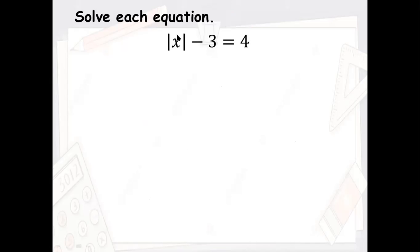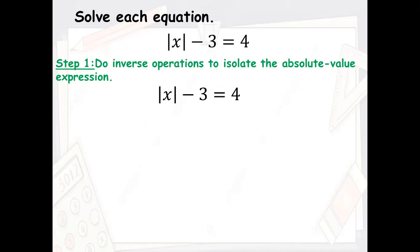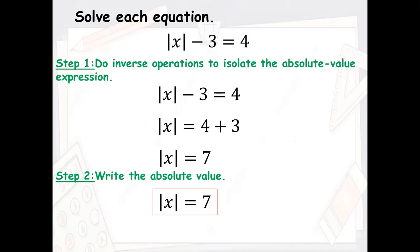Here you have to isolate the absolute value expression — leave it alone. To do that, you remove the number outside it using the inverse operation. Because there's a minus three on this side, you add three to the other side. So that gives you the absolute value of x equals seven, which means x can be seven or negative seven. The solutions are seven and negative seven.